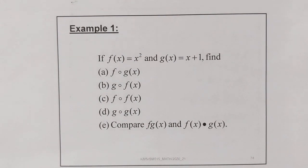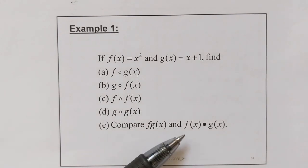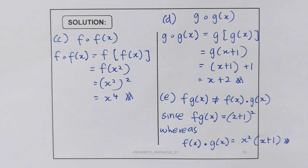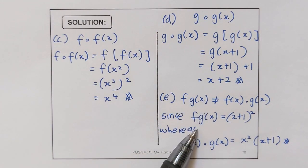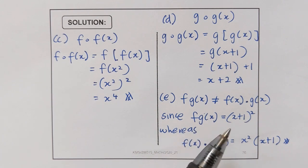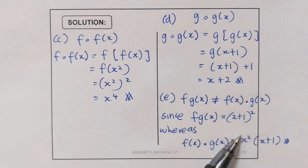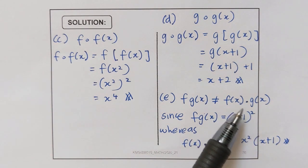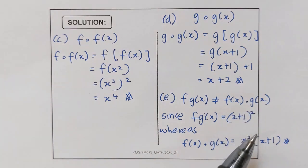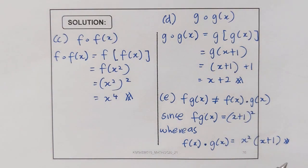Now for e, we need to compare f(g(x)) and f(x) times g(x). The answer is these are not the same, because f(g(x)) is (x plus 1) squared, whereas f(x) times g(x) is x squared times (x plus 1).